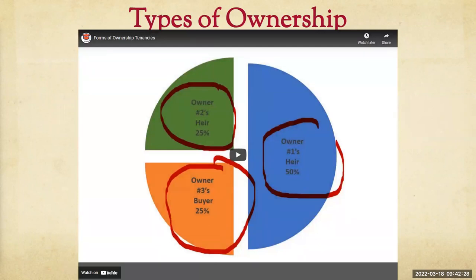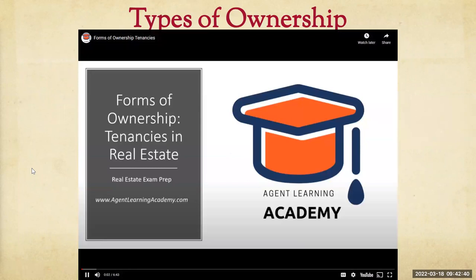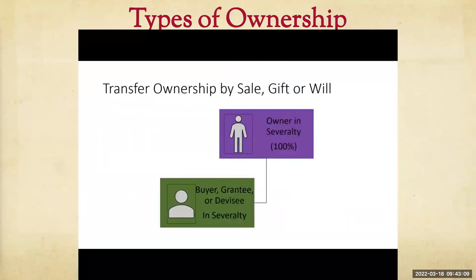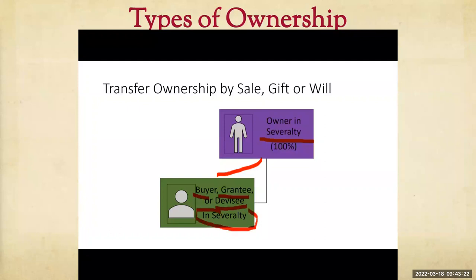Tenancy in severalty is absolute and sole ownership of property by an individual or legal entity such as a corporation, without co-tenants, joint tenants, or partners. Ownership is severed from all others with freedom to sell, gift, or devise — meaning to leave by will. Tenancy in severalty provides the owner with the most complete control of the land. Upon death, the owner's share passes to heirs.